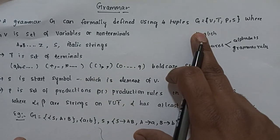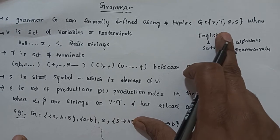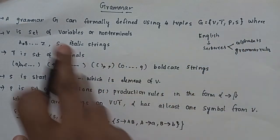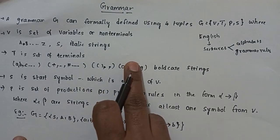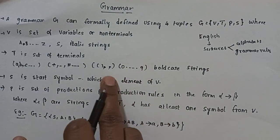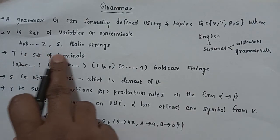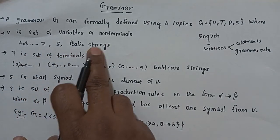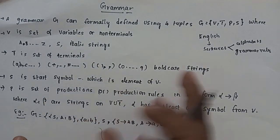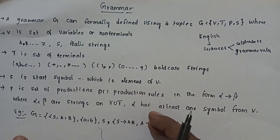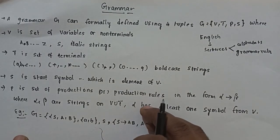Grammar G contains a set of 4 tuples: V, T, P, S. Where V is a set of variables or non-terminals. Non-terminals are represented using capital letters A to Z and S, written in italic form.